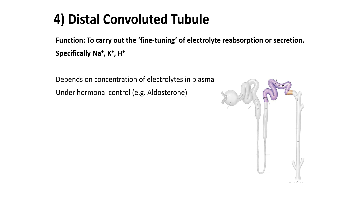The distal convoluted tubule carries out what you can essentially call fine tuning of electrolyte reabsorption or secretion — more specifically, sodium ions, potassium ions, and hydrogen ions. This depends on the concentration of electrolytes in plasma and is under the hormonal control of aldosterone.